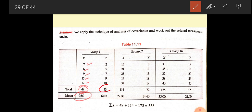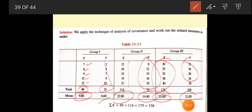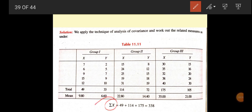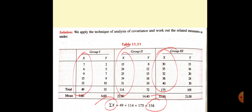72 divided by 5 is 14.4, this divided by 5 is 35, and this divided by 5 is 21. If you find the sum of X, sum of X means 49 plus 114 plus 175 equals 338. This is the sum of X.